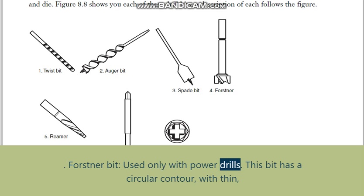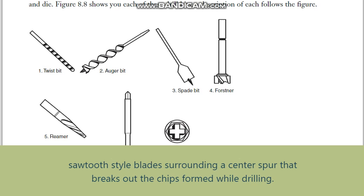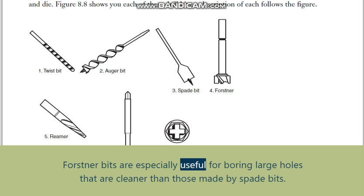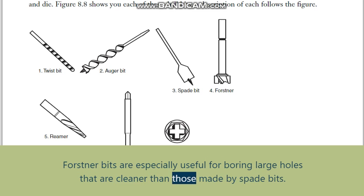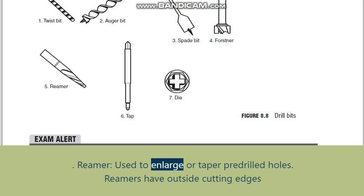The spade bit's long center point leaves a hole in the center of the workpiece. Forstner bit: used only with power drills. This bit has a circular contour with thin sawtooth-style blades surrounding a center spur that breaks out the chips formed while drilling. Forstner bits are especially useful for boring large holes that are cleaner than those made by spade bits.